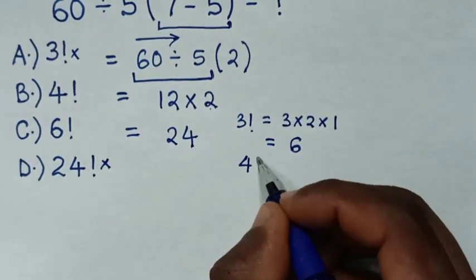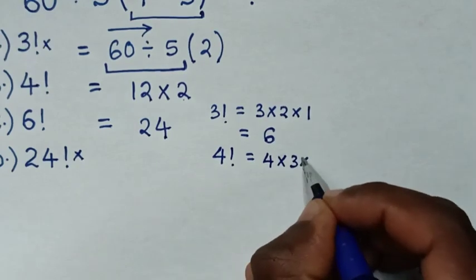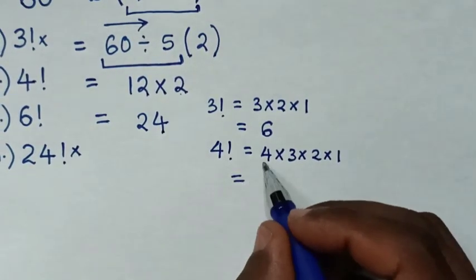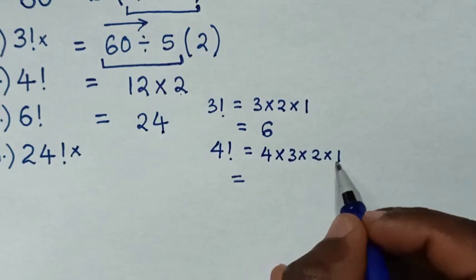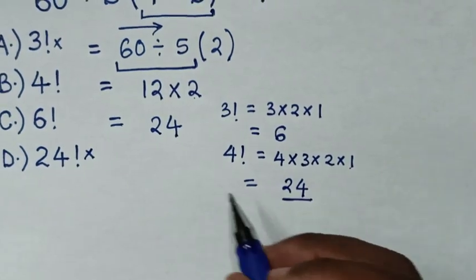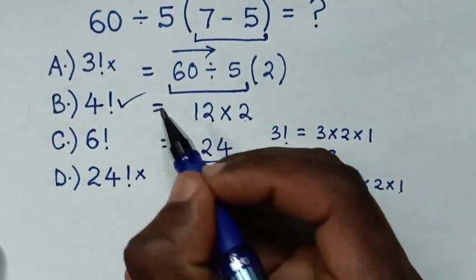Then, from 4 factorial is equal to 4 times 3 times 2 times 1, which is equal to 4 times 3 is 12, 12 times 2 is 24. So, this 24 is same as our answer. Therefore, B is the correct answer.